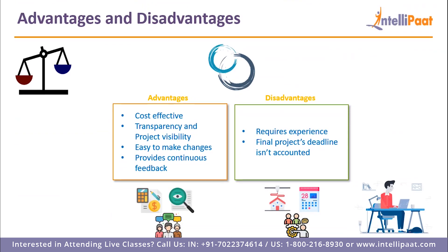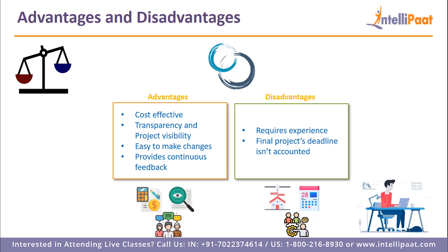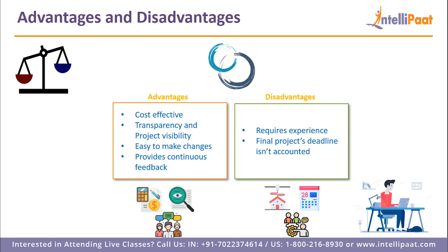Now let us discuss Scrum advantages and disadvantages. Scrum is cost effective — overhead cost in terms of management and process is reduced, leading to cheaper and quicker results. Transparency and project visibility are maintained with clients or end users. Changes are easy to make as the software team receives real-time input and feedback after completion of every sprint, allowing them to constantly update the system as needed. It also provides continuous feedback through daily check-ins and progress reports, offered at the team and individual level, which helps make the project better in the long run. As for disadvantages: it requires experience, as feedback can only be effective through relevant experience — otherwise there is a high possibility of system breakdown. The final project deadline is not considered in Scrum; personal sprint deadlines are managed to create a specific amount of work, but the overall project deadline is not accounted for.